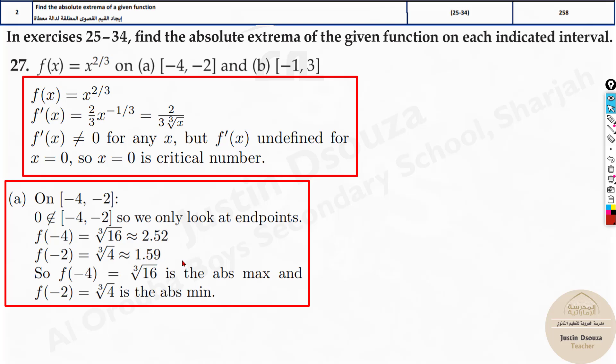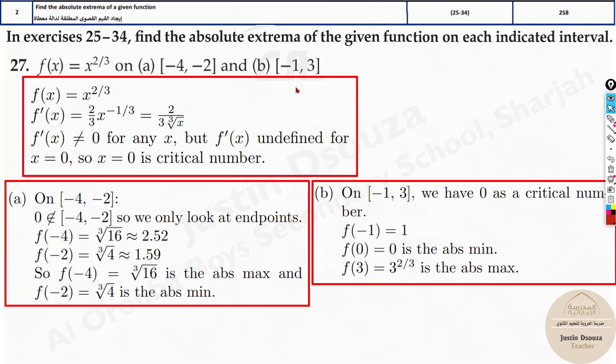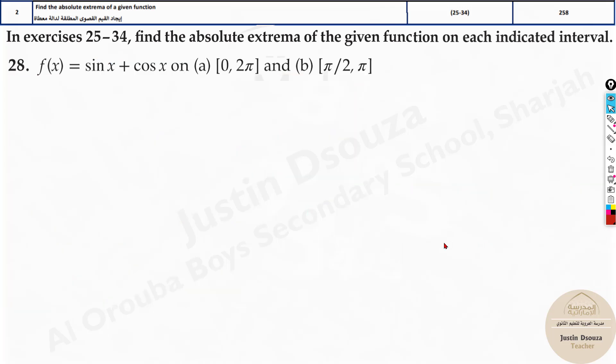See which is maximum which is minimum. Same thing here but the 0 is within this interval so all three values you need to substitute and solve. When you put 0 you'll get 0, minus 1 will be 1, and when you put 3 it'll be 3 to the power 2 by thirds. Which is the maximum? Obviously 3 to the power 2 by 3 and minimum would be 0. That's how we solve it.